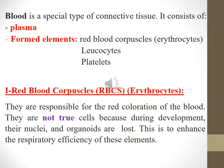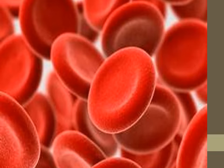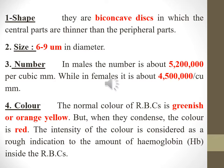Red blood corpuscles, or RBCs, or erythrocytes, are responsible for the red coloration of the blood. They are not true cells because during development their nuclei and organelles are lost, to enhance the respiratory efficiency of these elements. RBCs are bi-concave discs in which the central parts are thinner than the peripheral parts. Their size is 6 to 9 micrometers.